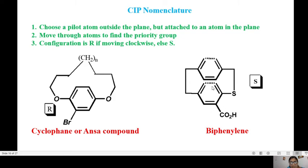This is an example of a biphenylene molecule where you have one phenyl ring over another phenyl ring just like a double decker bus. The substituent is CO2H here and the pilot atom will be the sulfur because it is closer to CO2H. You move from sulfur towards the plane to the substituent in an anticlockwise rotation. So your rotation is S. This is S biphenylene.